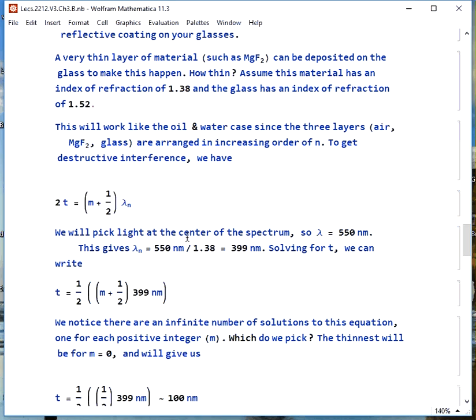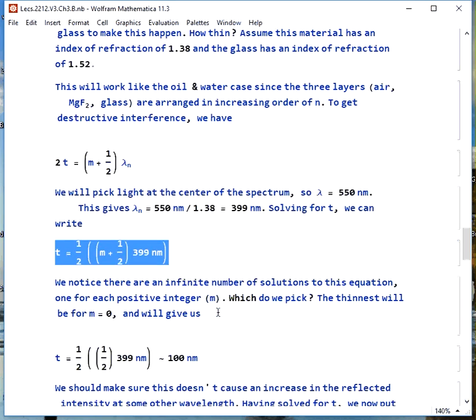That means this will act like the oil and water case since we go air magnesium fluoride glass and that means index of refraction goes up from air to the fluoride and again from the fluoride to glass. This means destructive interference which is what we want. We'll use the equation 2t equals m plus one half lambda n.